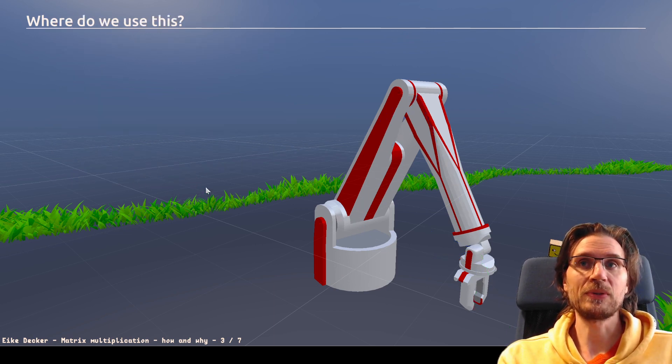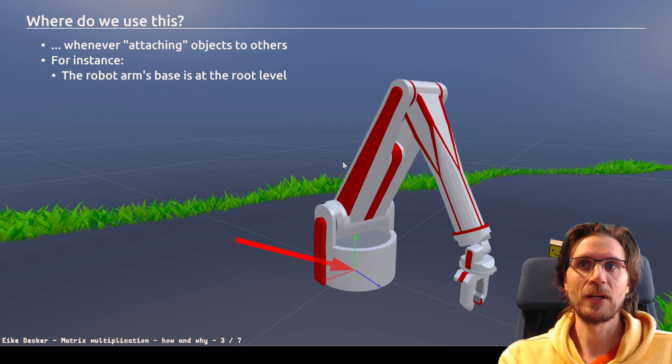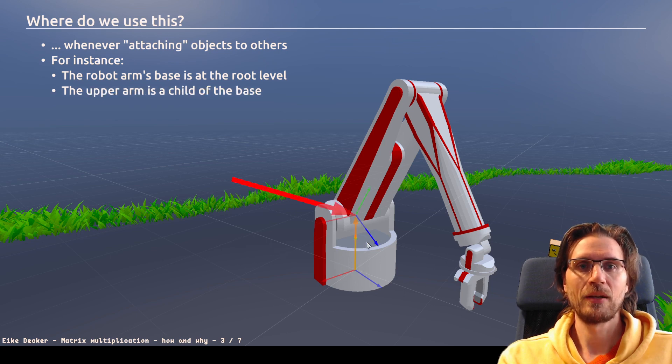Now, where do we use this kind of operation? Well, whenever we want to attach objects to another object. For instance, we have the robot base. It's located here. This is a transformation matrix at this location. Now, the upper arm is attached to the base. And this is now the transformation matrix we use here.